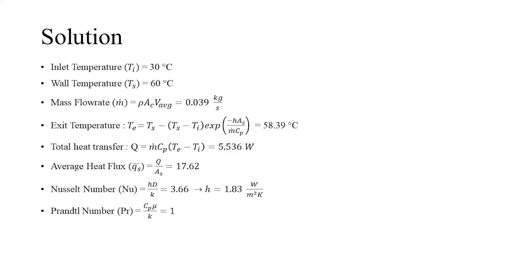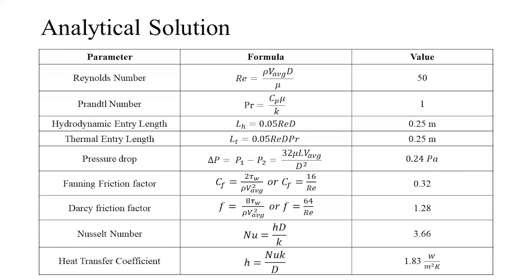For the case of constant wall temperature, the value of Nusselt number converges to 3.66. From the Nusselt number, we calculate the heat transfer coefficient. The parameters valid for the flow described in the problem, which are to be validated against the simulated results.